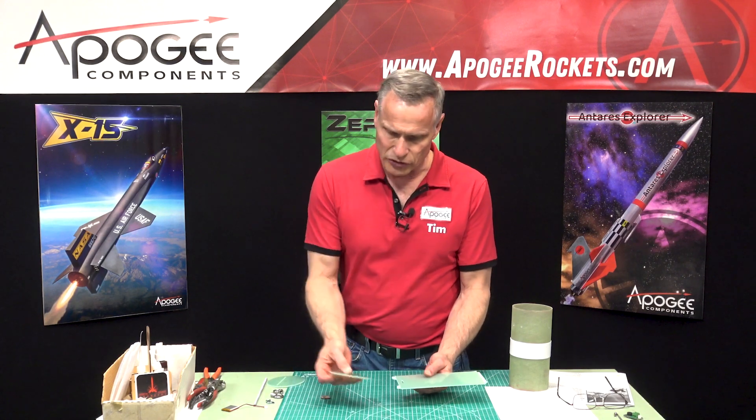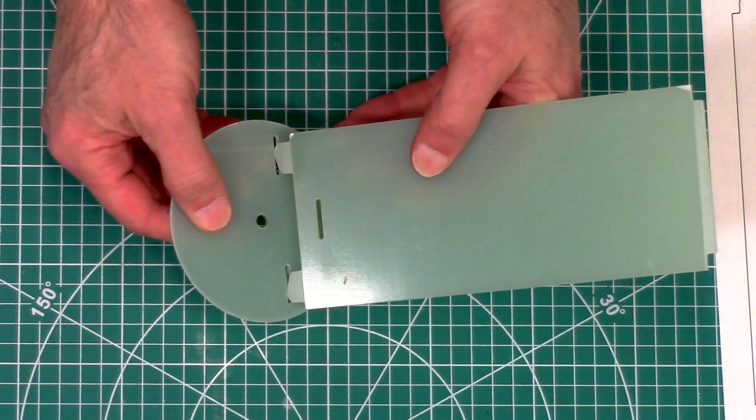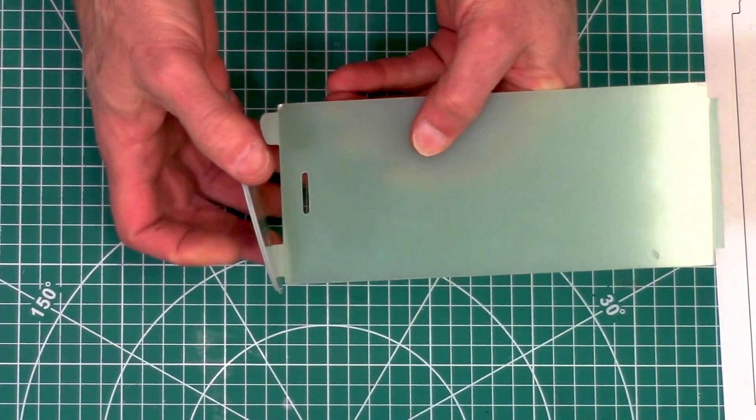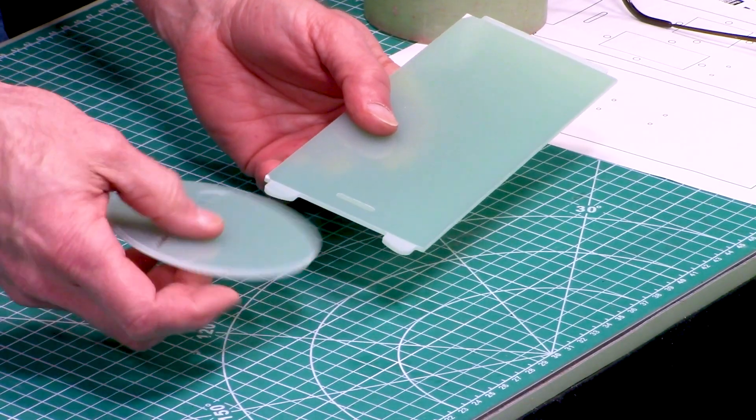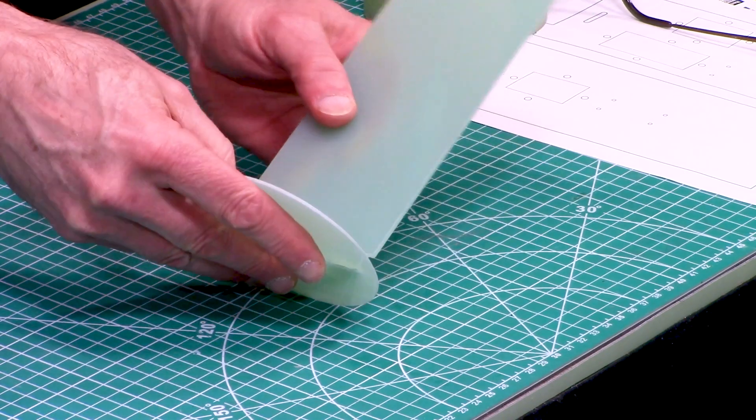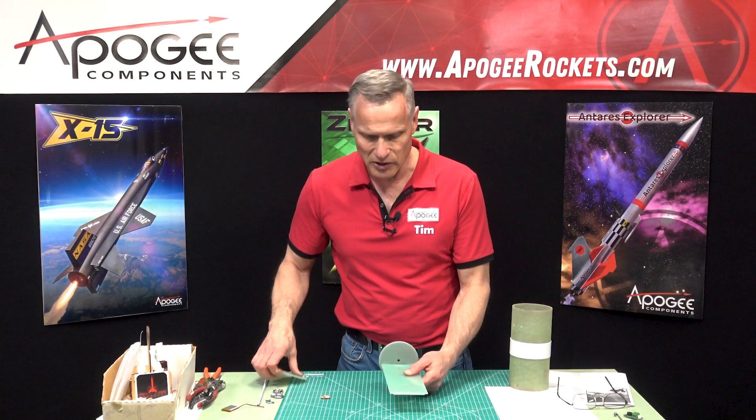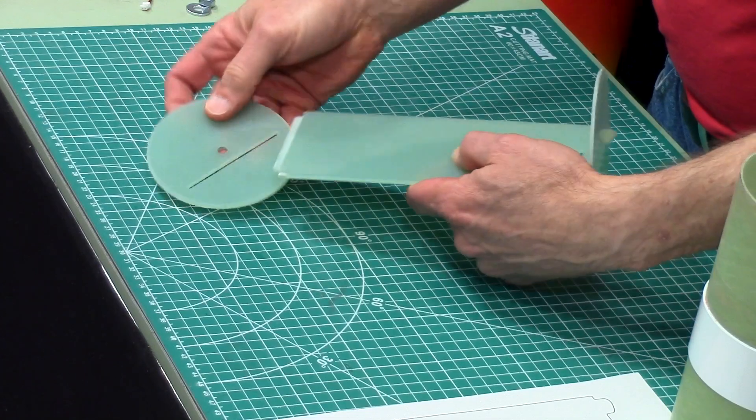Now you'll see that there's a bulkhead with two slots in it. This goes into—you may have to sand these down a little bit so that it fits into those slots. Same thing on this end, it'll go into that slot right there.